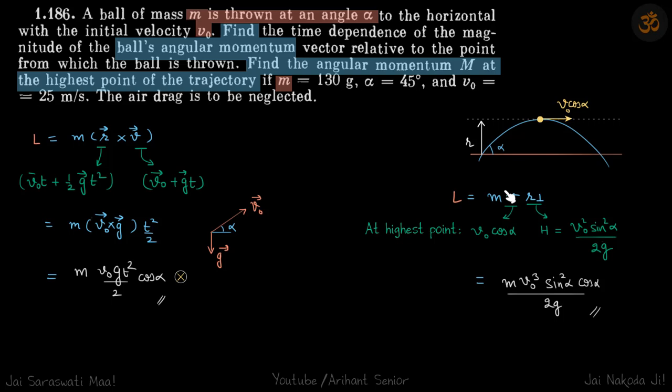So we just put the value. So v at the highest point is still the horizontal velocity which is v naught cos alpha and r perpendicular is height of the projectile which we know is v naught square sine square alpha by 2g. That gives our answer.